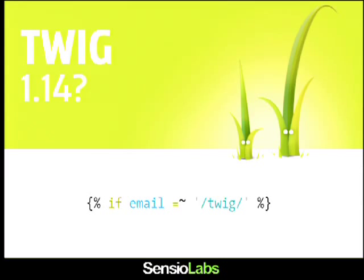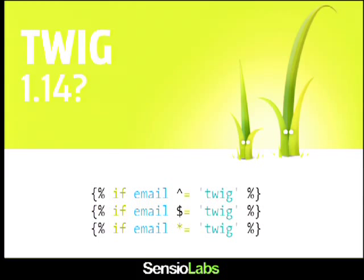Instead of adding a new operator, what about adding a new filter? A filter modifies a value — 'upper' gives you the uppercase version of the name, 'strip_tags' still returns the description. If we add a 'starts_with' filter, it doesn't work well because it's going to return a Boolean, not an email anymore. We could use a function instead: 'starts_with(email, twig)'. That's why I'm asking — I'm not necessarily saying these operators will be added to Twig.